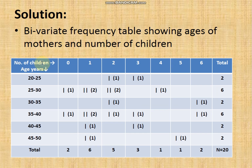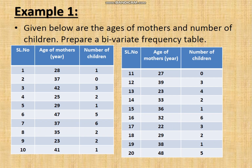According to the rules of classification, the ages of mothers are divided into class intervals: 20–25, 25–30, 30–35, 35–40, 40–45, and 45–50. The number of children is listed as discrete values: 0, 1, 2, 3, 4, 5, 6. So one side is a continuous distribution and the other is a discrete distribution.